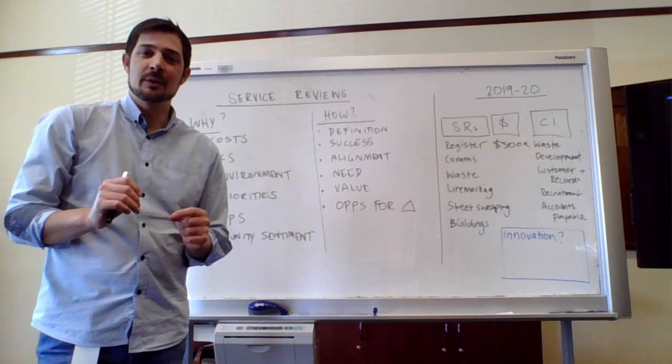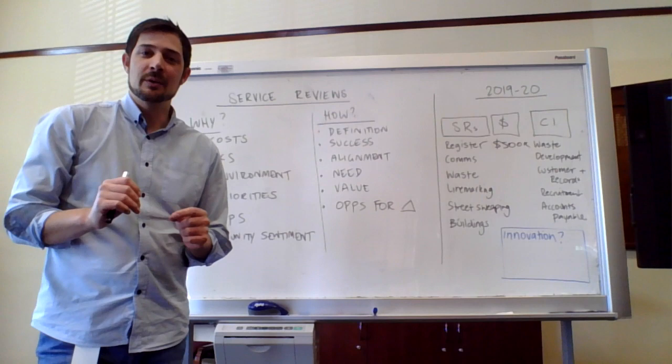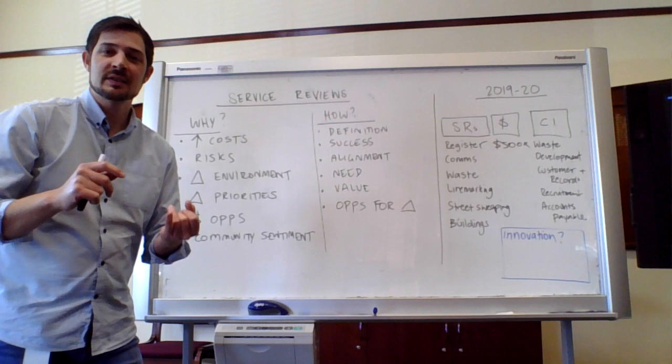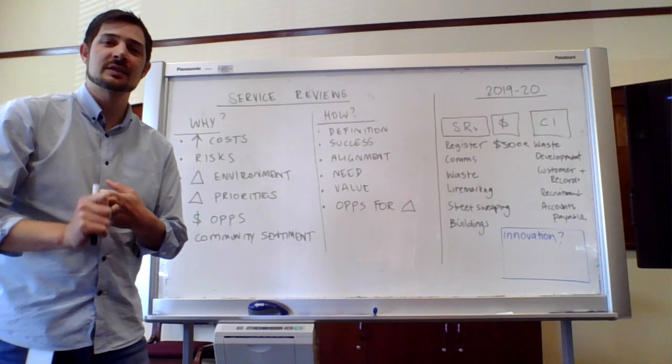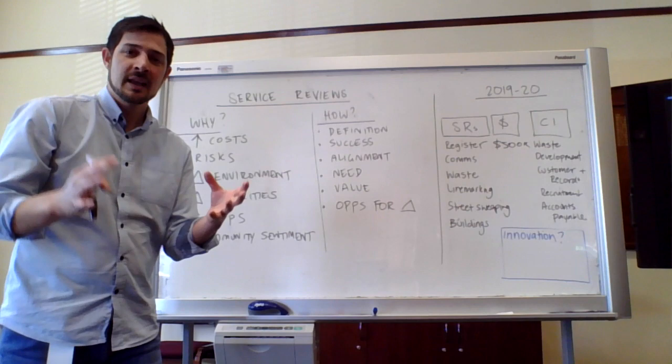But if you are to nominate a review, these are the types of reasons why we think a review should be undertaken: in response to changing costs, escalating costs, in response to risk, in response to a changing environment, be it legislative, environmental, physical, or digital.